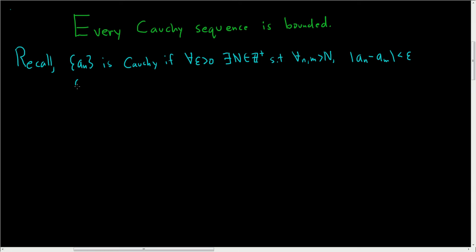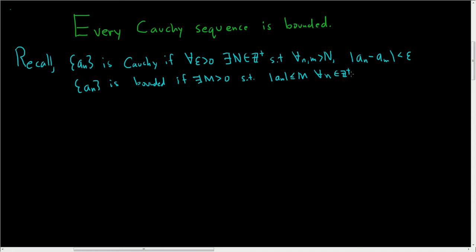And a sequence a_n is bounded if we can find a positive number, say M, such that the absolute value of the terms is less than or equal to M for all positive integers little n. So let's go ahead and start the proof.